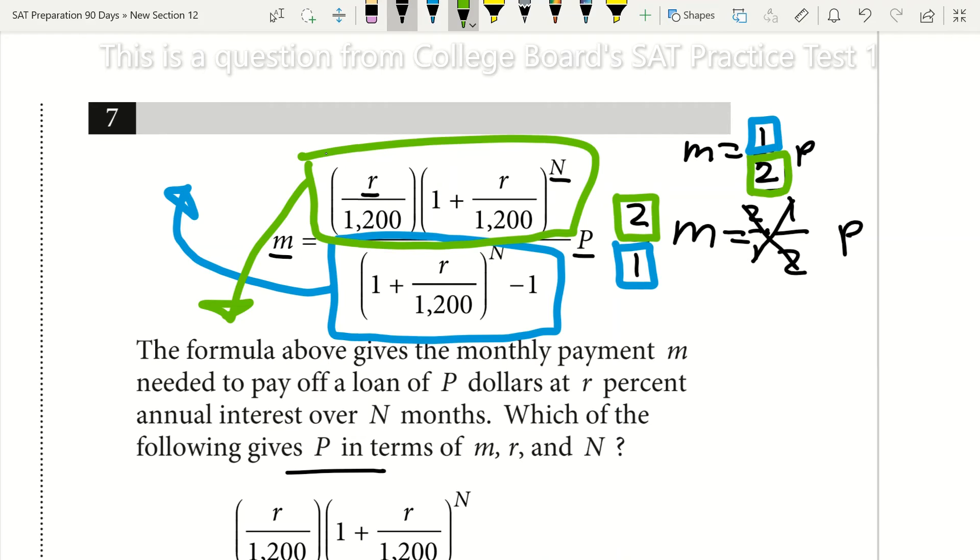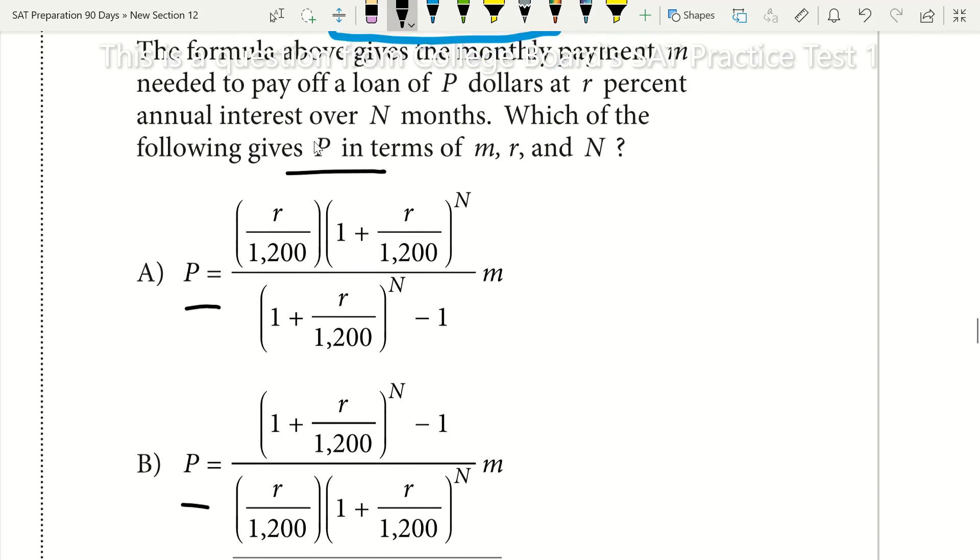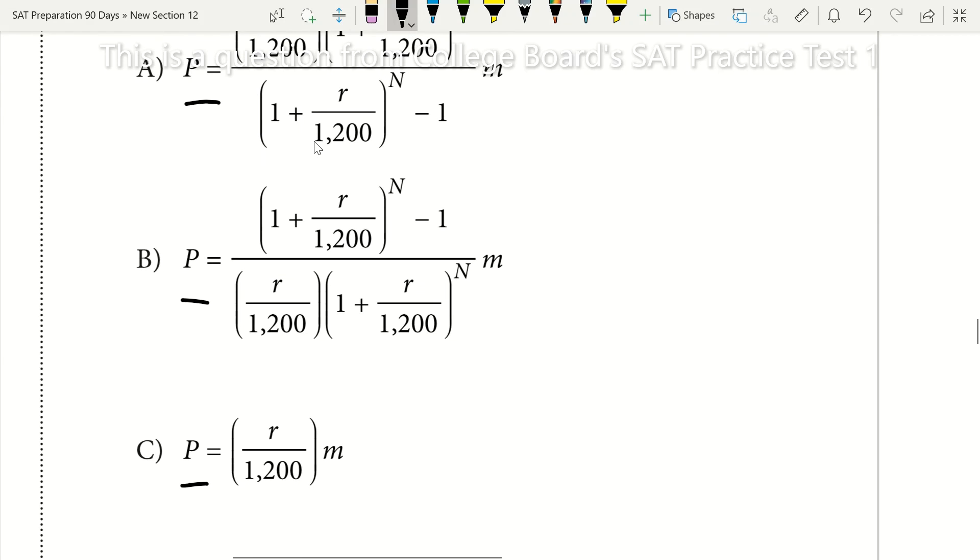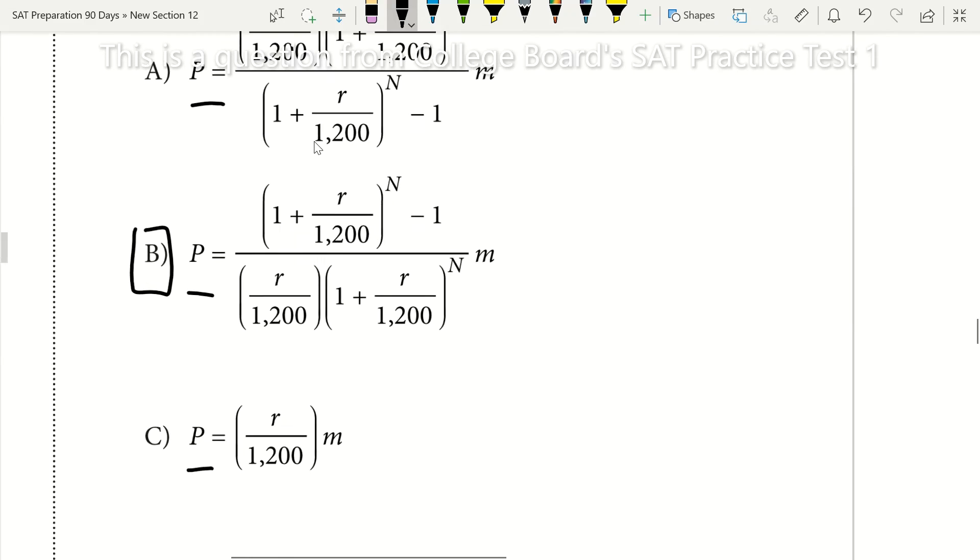Now all we have to do is put a line through there, and now we have our answer. So now I just have to look for which answer choice has this minus 1 in its numerator. I see the only option with that minus 1 in its numerator is option B. Therefore, B is going to be my answer.